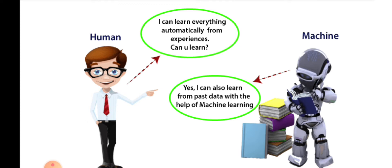I can learn everything automatically from experience. I can also learn from past data with the help of machine learning. Machine learning is a definite item for a machine — I can learn everything from the human brain.